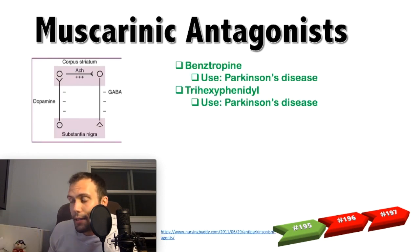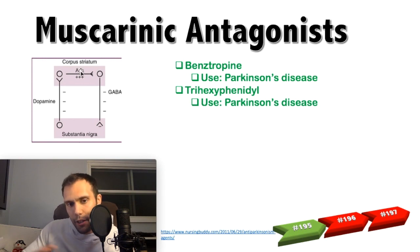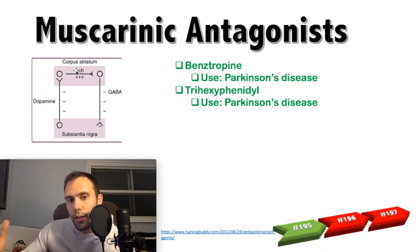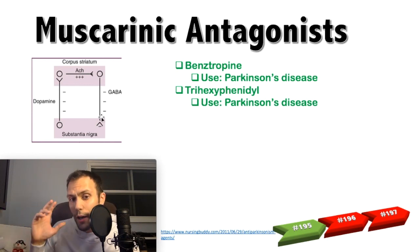Benztropine and trihexyphenidyl are used in Parkinson's disease. In the basal ganglia, there is a balance between dopamine and acetylcholine — dopamine exerts an inhibitory effect on acetylcholine. When dopaminergic neurons are lost, dopamine decreases, leading to increased acetylcholine sensitivity and excess acetylcholine, which affects other neurotransmitters like GABA and exacerbates Parkinson's symptoms. Therefore, anticholinergic medications will improve Parkinson's disease symptoms.